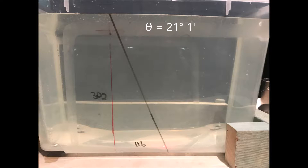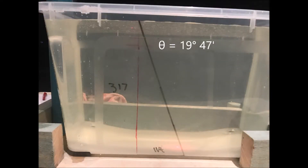In the test using 10 kilograms of sugar, theta became 21 degrees and 1 minute. The opposite value of theta continued to decrease and the adjacent value continued to increase, meaning the angle continues to decrease and therefore the index of refraction increases. In the 15 kilogram test of sugar, theta became 19 degrees and 47 minutes. There is a clear trend: the more solute you add to the solution, the more the degree is lowered, and therefore there is a higher index of refraction as the light becomes continuously more bent in every single test.